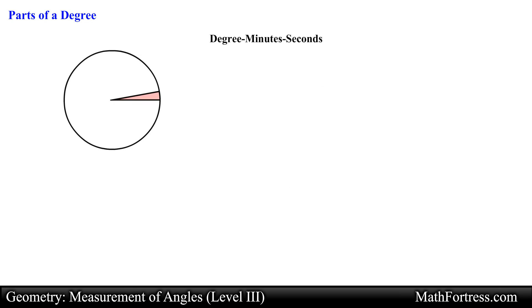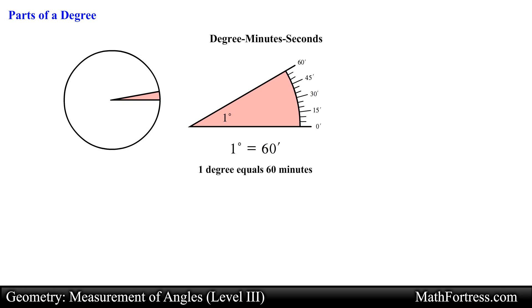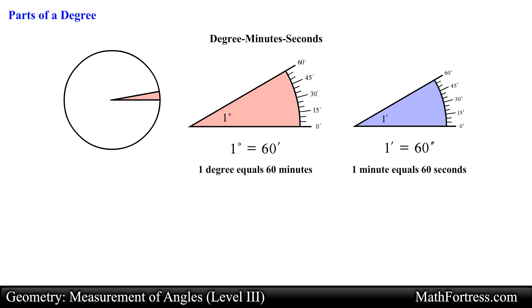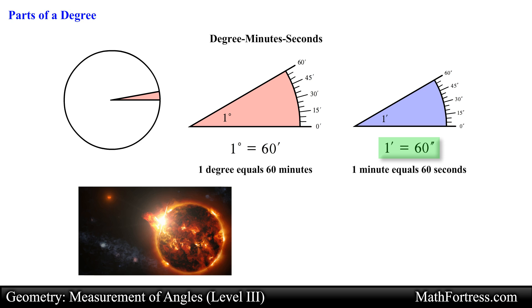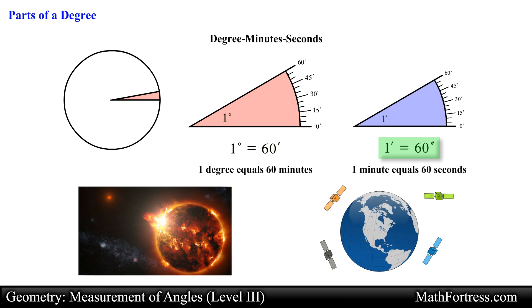In the minutes and seconds notation, a degree is divided into 60 minutes. For even finer measurements, the minute can be divided into 60 seconds. This last unit is very small and is usually used for astronomical measurements and measuring latitude and longitude.